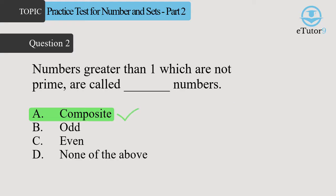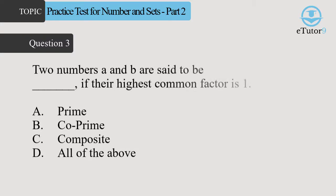Answer is A. Composite. Question 3. Two numbers A and B are said to be blank if their highest common factor is 1. Answer is B. Coprime.